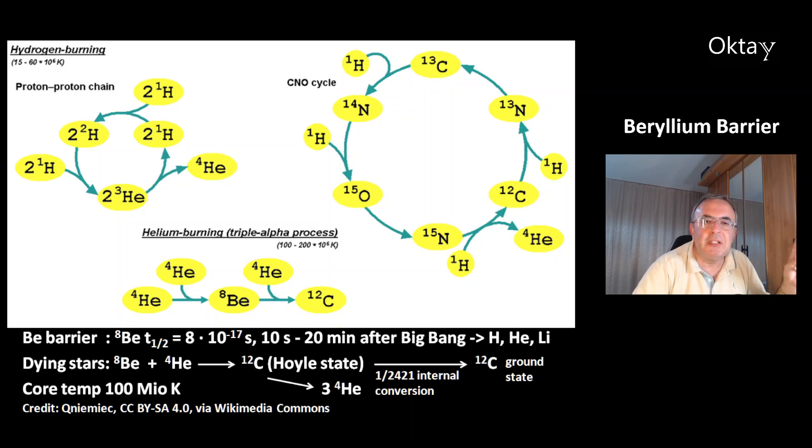At the top left, that's the nucleosynthesis of helium-4 from hydrogen. At the top right, that's another reaction, CNO cycle, which also produces helium-4 from hydrogen.